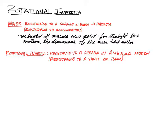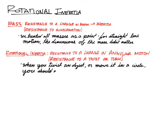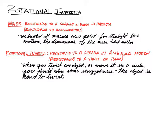In class, we'll spend a little bit of time talking about some examples of this, allowing you to feel differences in rotational inertia between different objects. When you twist an object or move it in a circle, you should notice some sluggishness. When the object is harder or less hard to twist, that's a change in rotational inertia.